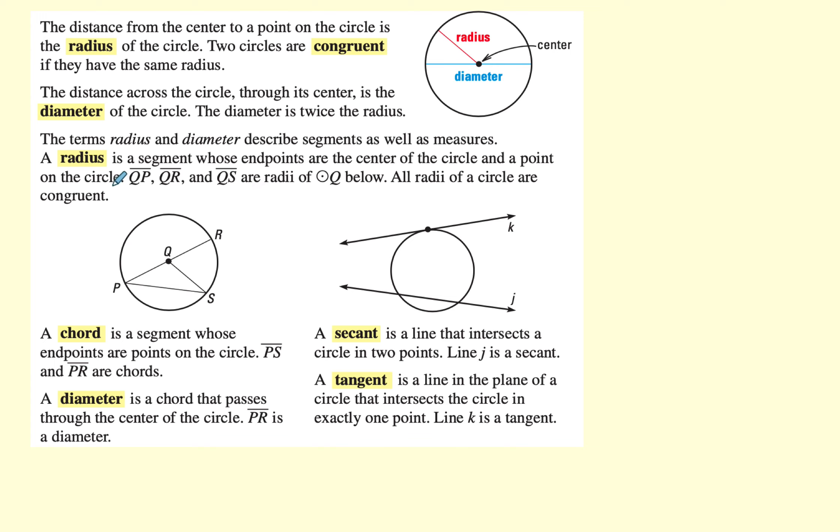A radius can be described in segments. For the radii, we can say segment QR, QP, or QS for circle Q.